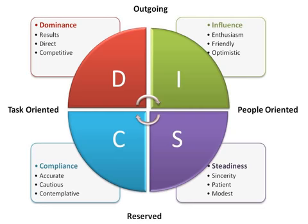Drive: People who score high in the intensity of the D style factor are very active in dealing with problems and challenges, while low D scores are people who want to do more research before committing to a decision. High D people are described as demanding, forceful, egocentric, strong-willed, driving, determined, ambitious, aggressive, and pioneering.